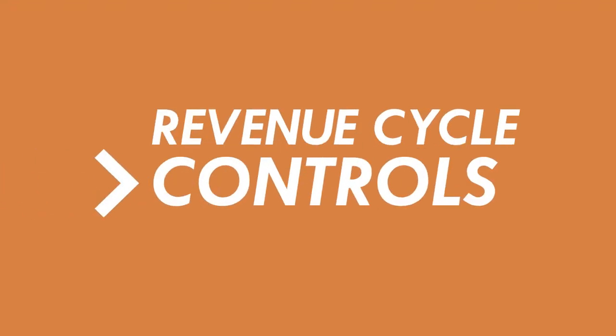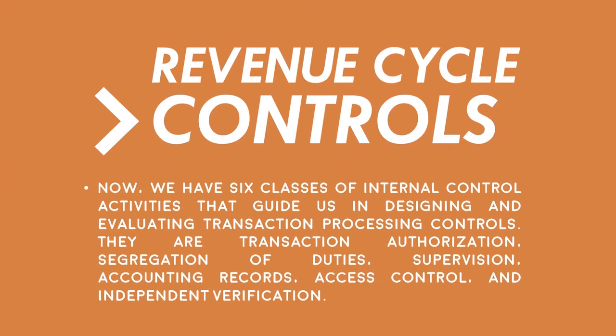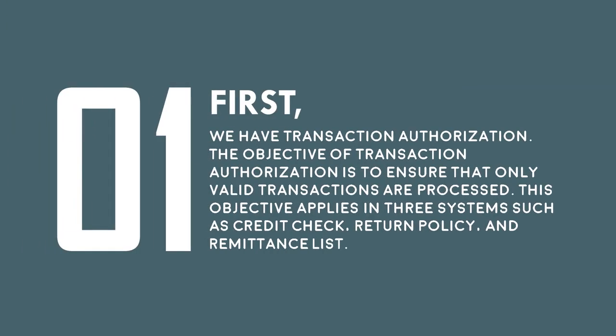Hi, I'm Maria Sofia Mendoza. Now we have six classes of internal control activities that guide us in designing and evaluating transaction processing controls. They are: transaction authorization, segregation of duties, supervision, accounting records, access control, and independent verification. First, we have transaction authorization. The objective is to ensure that only valid transactions are processed. This applies in three systems such as credit check, return policy, and remittance list.